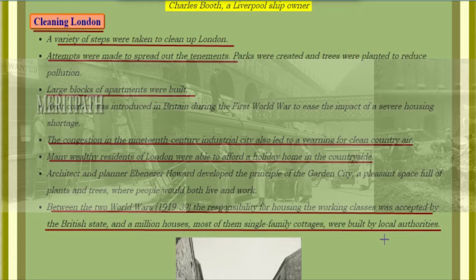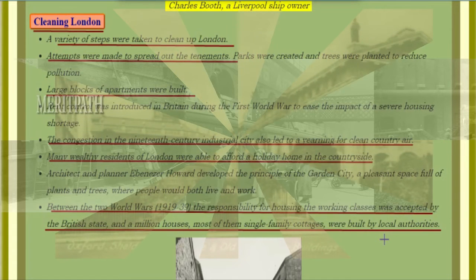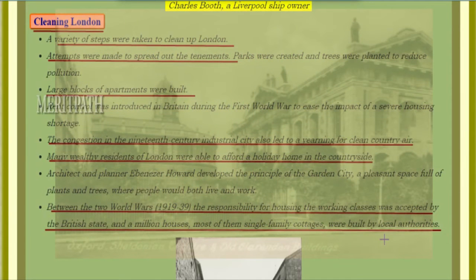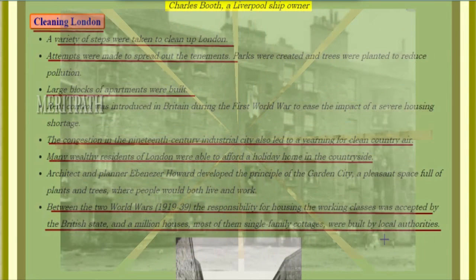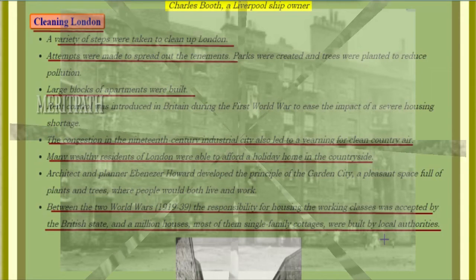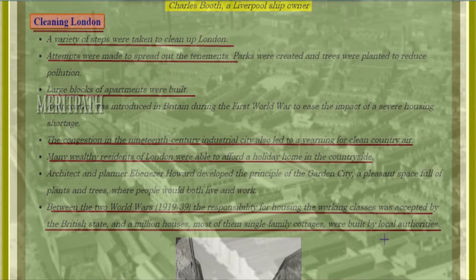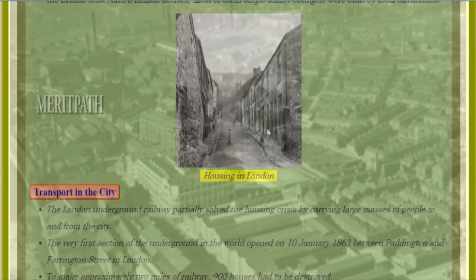Between the two world wars, from 1919 to 1939, the responsibility for housing the working classes was accepted by the British state. A million houses, most of them single-family cottages, were built by the local authorities.